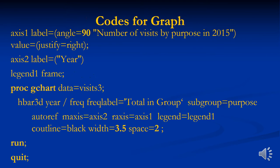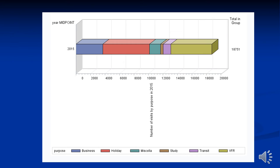Now I'm going to show you the reason why people visited the UK in 2015 on a graph with this code. This is the code, and this is the graph produced from that code.